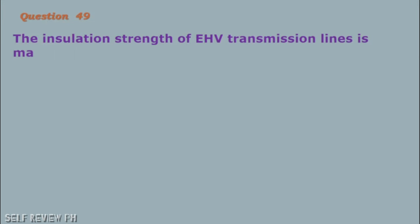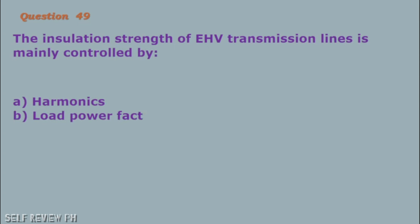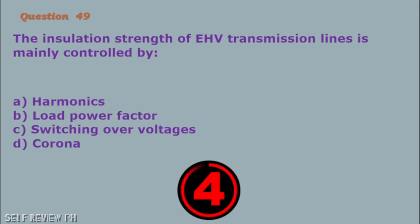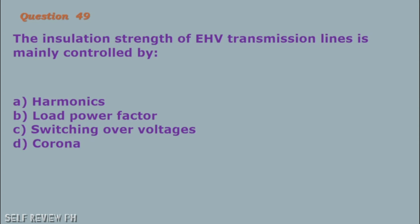Question number 49: The insulation strength of extra high voltage transmission lines is mainly controlled by: A. Harmonics B. Load power factor C. Switching overvoltages D. Corona. The correct answer is letter C, switching overvoltages.